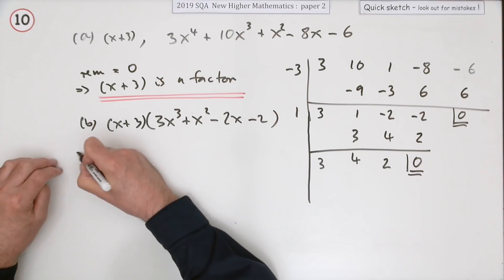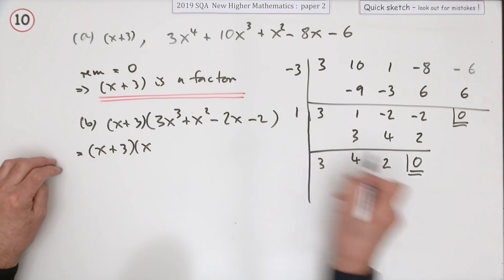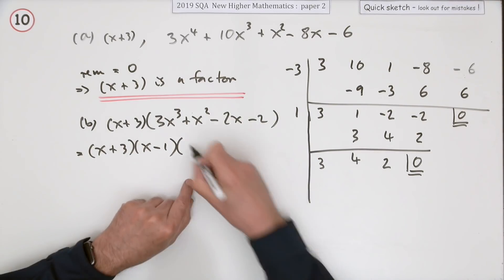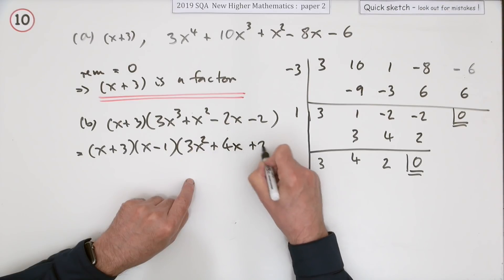So x+3—if 1 produced the answer 0, then x-1 was a factor. Now you're left with a quadratic and you're happy again: 3x²+4x+2.